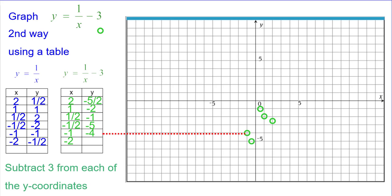And finally, negative 1 half minus 6 halves would be negative 7 halves. So plot negative 2 comma negative 3 and a half.